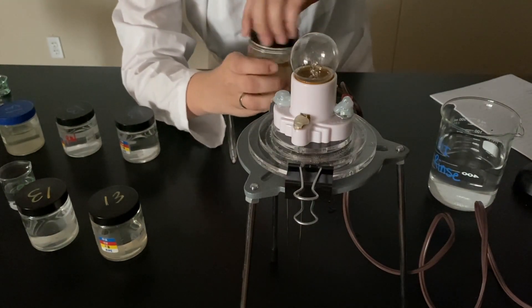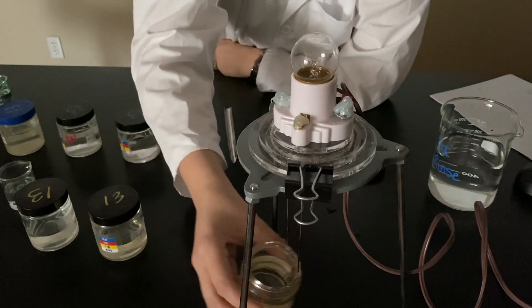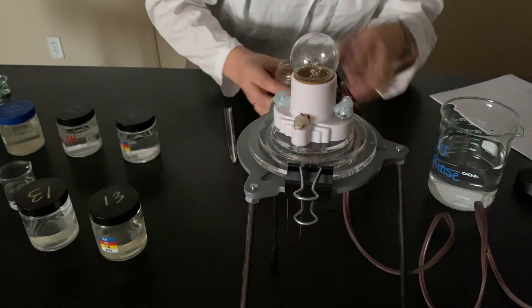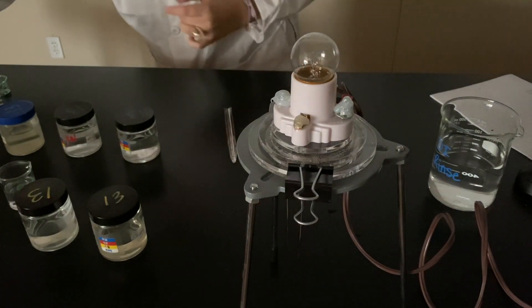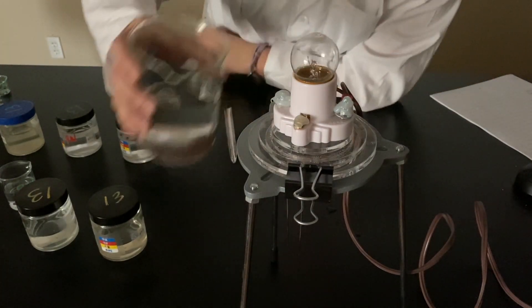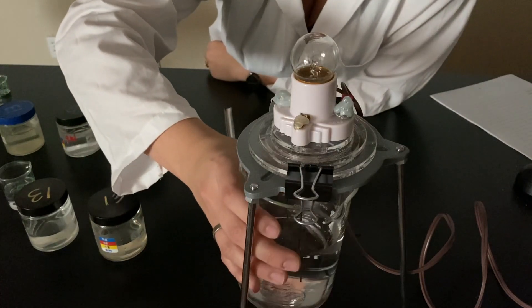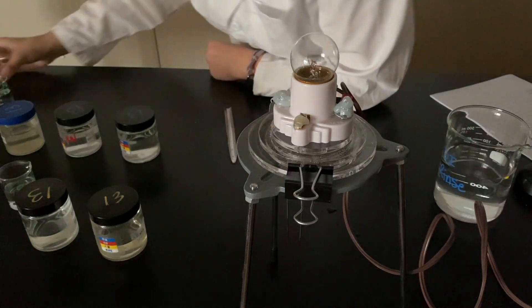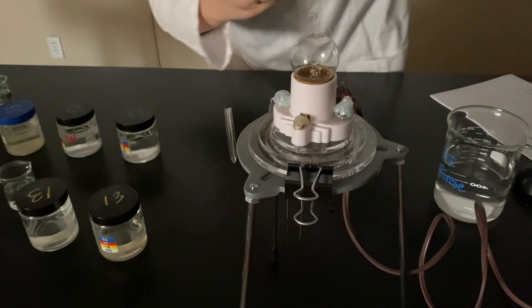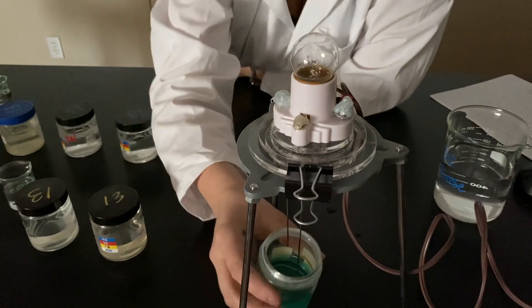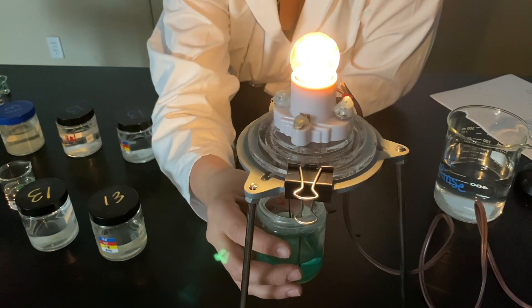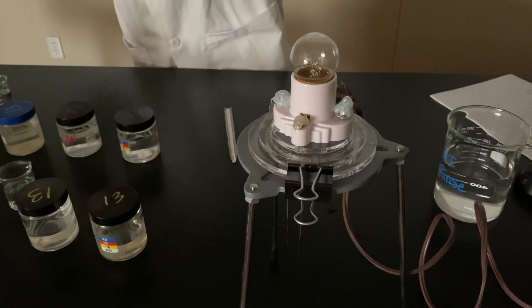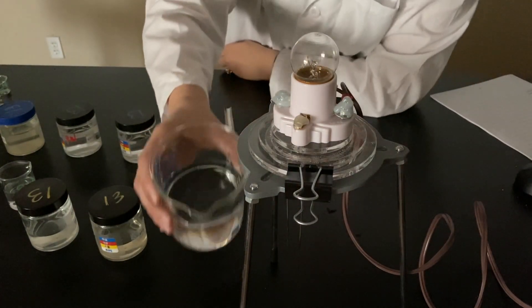And 0.1 molar aluminum nitrate. This is getting repetitive for you. Hopefully not. 0.1 molar copper to sulfate. Beautiful. So lovely. And rinse. Let's do it.